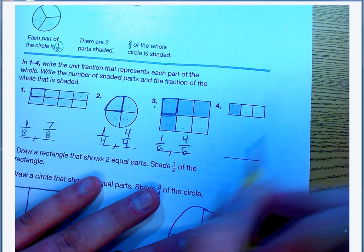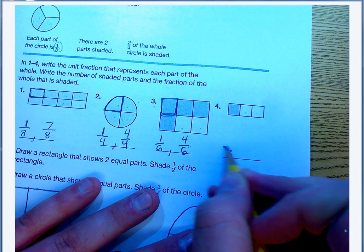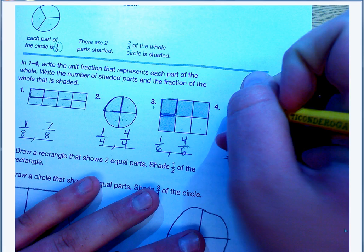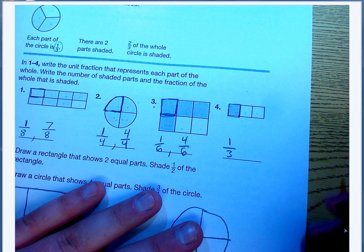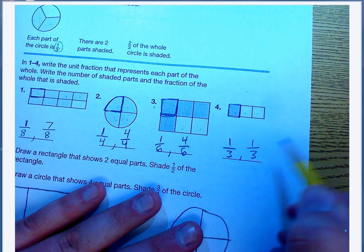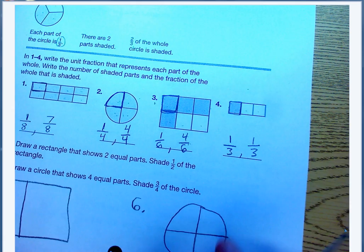Last one, I have one, two, three equal parts, so my unit fraction is going to be one-third. One of these pieces is one-third of my rectangle. And how many are shaded? Oh, same answer as my unit fraction. One out of my three are shaded. One-third of this rectangle is shaded.